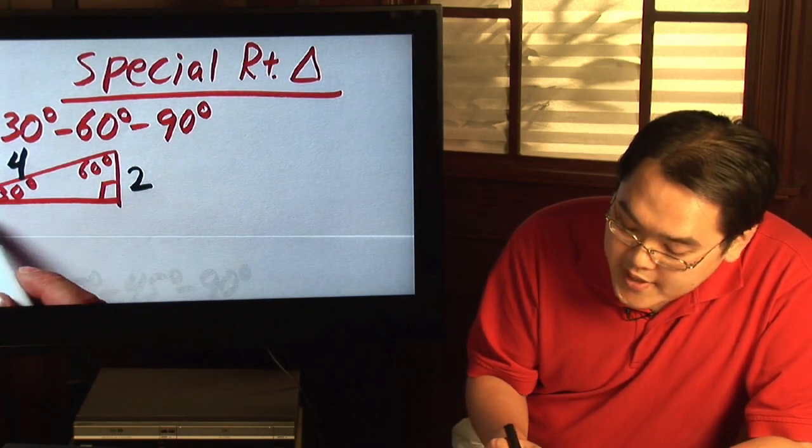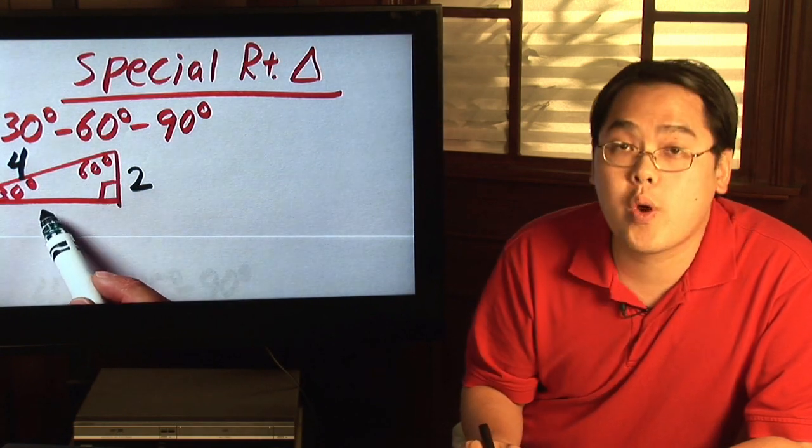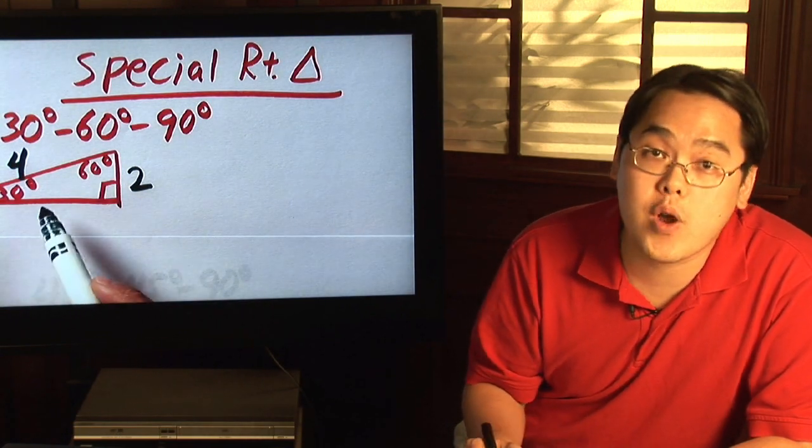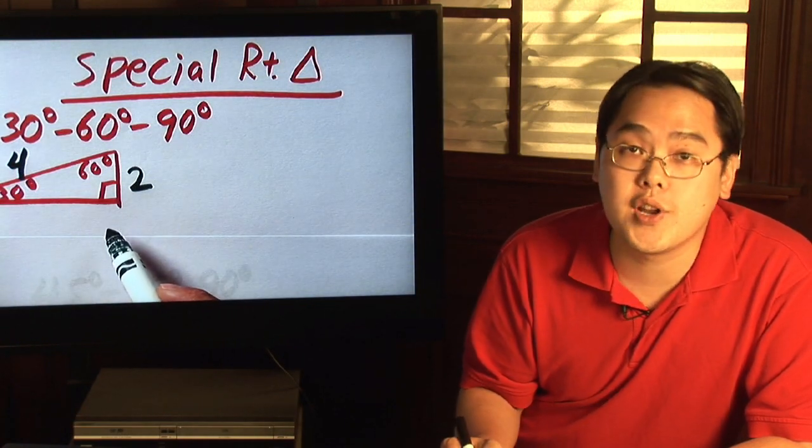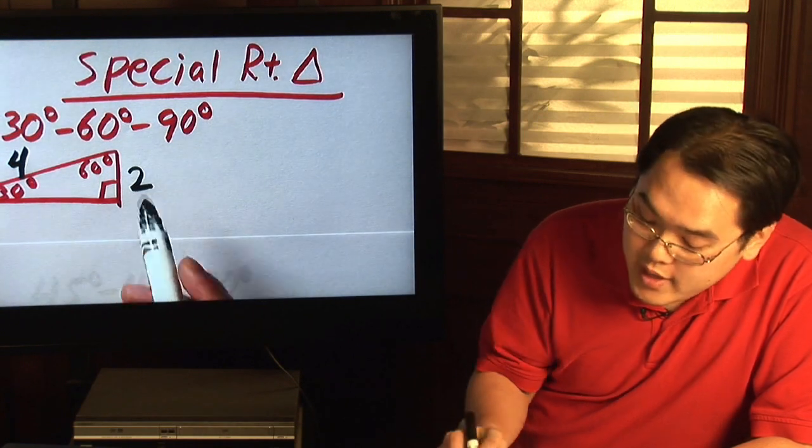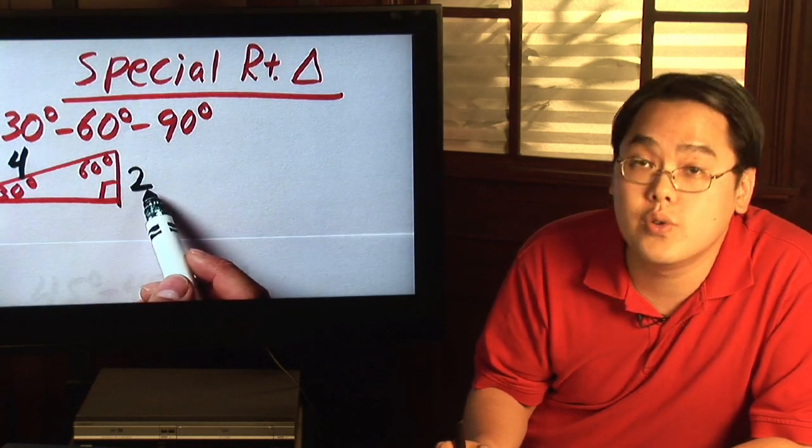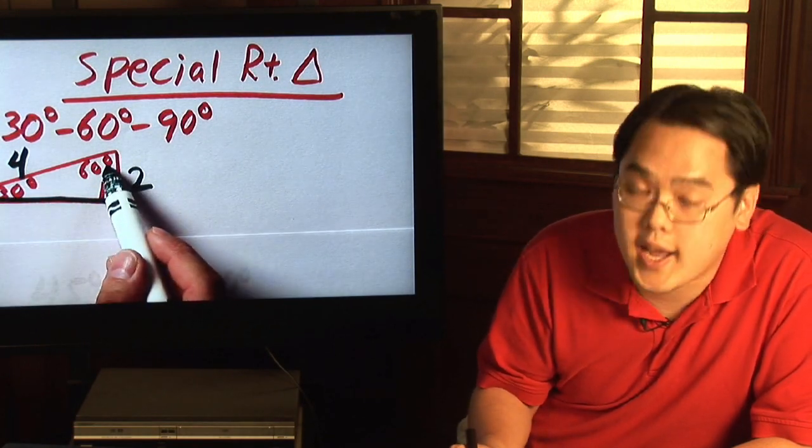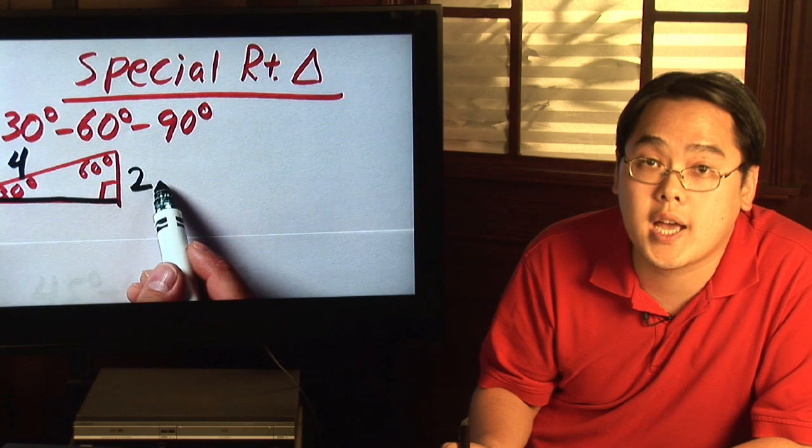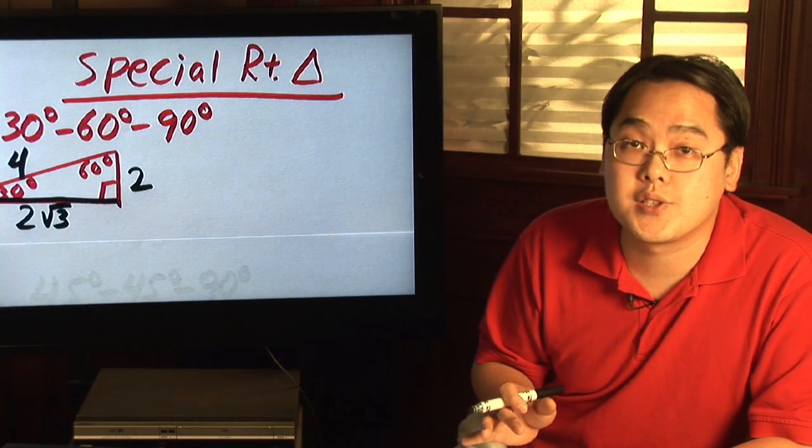Also, the side that's facing the 60 degree angle is going to be square root of three times the side that's facing the 30 degree angle. So again, here's another example. If the 30 degree angle side is two, then the side that's facing the 60 degree angle is going to be square root of three times that. In other words, two times square root of three. That will always be the case.